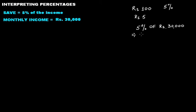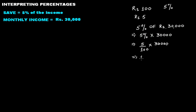It means what? It means five percent times 30,000, that is 5 over 100 times 30,000, and if you solve this you get 1,500. So your monthly saving is rupees 1,500.